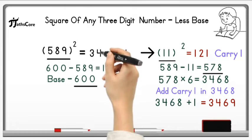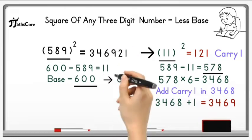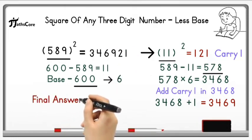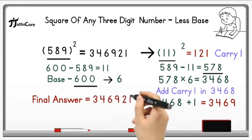It is equal to 3468 plus 1 equals 3469. Now write down this number 3469 before 21 in a product. And this is your final answer, 346921.